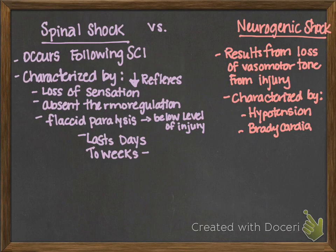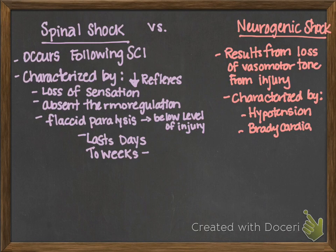But in neurogenic shock, you've got this loss of vasomotor tone from the injury, so it cannot do that. In most shocks you're going to see tachycardia because the sympathetic nervous system has kicked in. But with neurogenic shock, because of this loss of vasomotor tone, you're going to see bradycardia and hypotension. All other shocks you'll see hypotension but always tachycardia — with neurogenic shock, even though the sympathetic nervous system has kicked in, it cannot do its job.